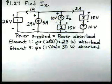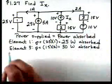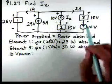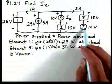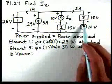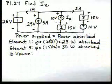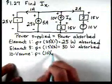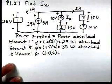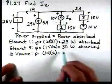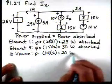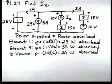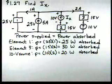Now let's look at the 10-volt source. There are also two amps flowing through this source, and notice the current is entering the plus and leaving the minus. That configuration satisfies the passive sign convention, so the 10-volt source is also absorbing power — in fact it's absorbing 20 watts.